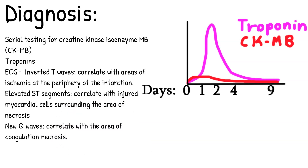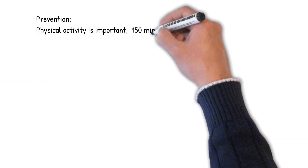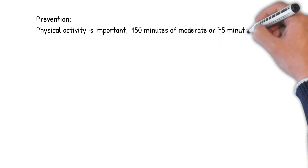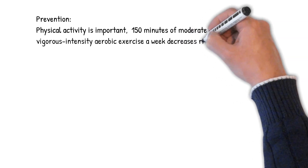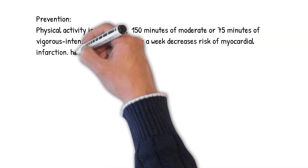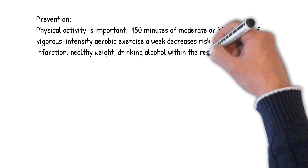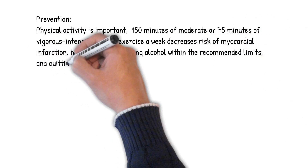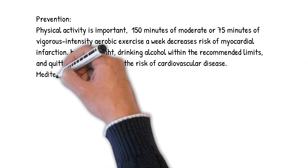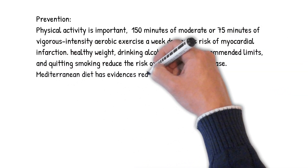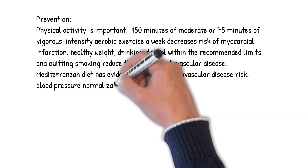Prevention: physical activity is important — 150 minutes of moderate or 75 minutes of vigorous intensity aerobic exercise per week decreases risk of myocardial infarction. Maintaining a healthy weight, drinking alcohol within recommended limits, and quitting smoking reduce cardiovascular disease risk. The Mediterranean diet has evidence of reducing cardiovascular disease risk. Blood pressure normalization, healthy body mass index, and normal waist circumference are important indicators.